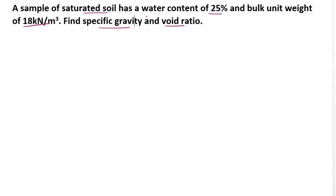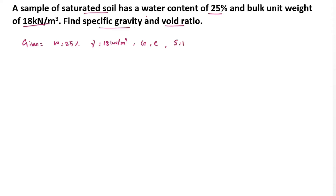First we can write the given data. The water content W is equal to 25%, and gamma is equal to 18 kN per meter cube. We have to find out the G value and E value. Another given is that the sample is saturated soil, so S is equal to 1.